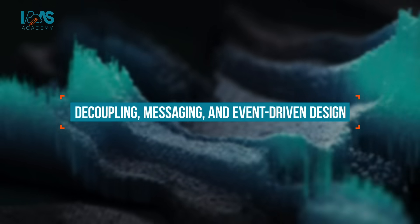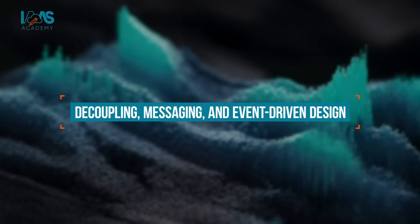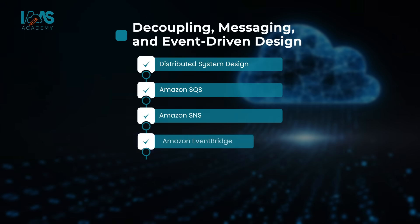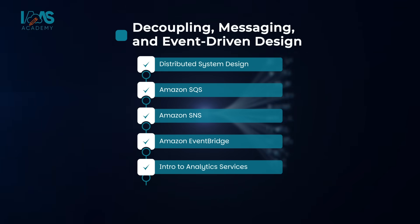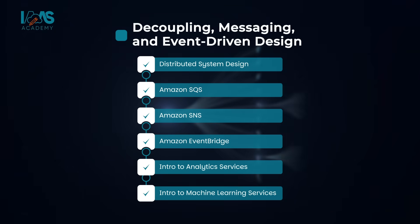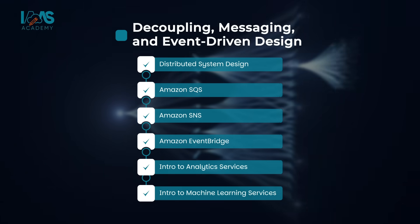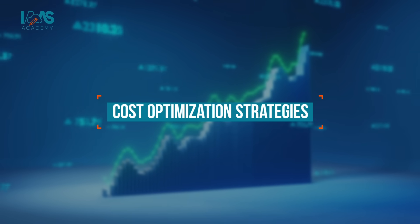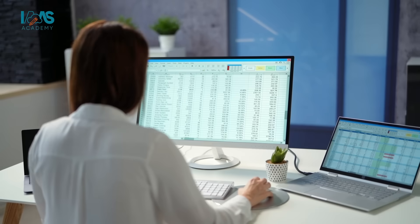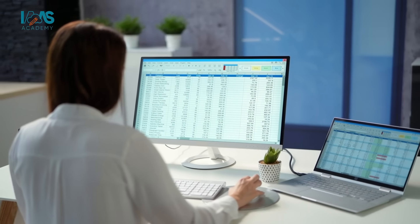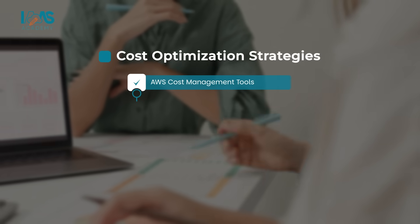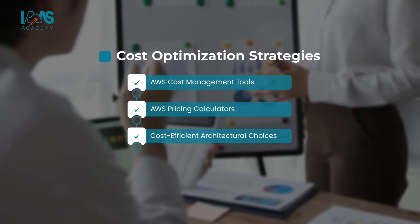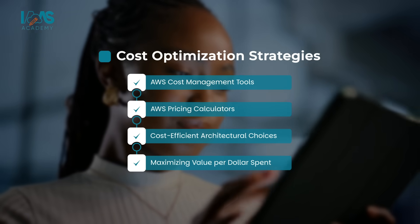There's also decoupling, messaging, and event-driven design, where you'll learn how to build distributed systems with Amazon SQS, SNS, and EventBridge, along with an introduction to analytics and machine learning services that bring intelligence into your architecture. Then there's cost optimization strategies, because a great architect must also be a financially responsible one. You'll learn how to use AWS cost management tools, pricing calculators, and architectural choices that deliver maximum value for every penny spent.